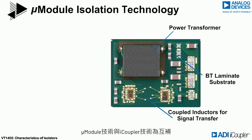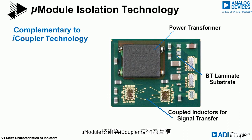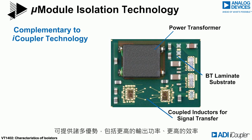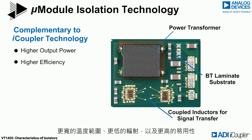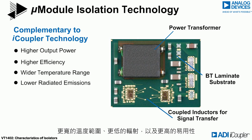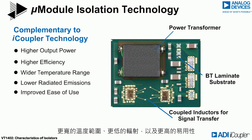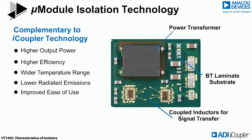Micromodule technology is complementary to i-coupler technology, offering many benefits including higher output power, higher efficiency, wider temperature range, lower radiated emissions, and improved ease of use.